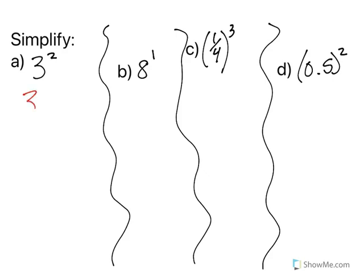Well, what does three squared mean? It means I take my base and I multiply it by itself. The exponent is two, so I should have two threes. So three times three is nine.